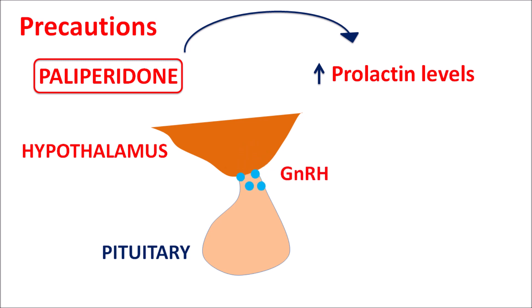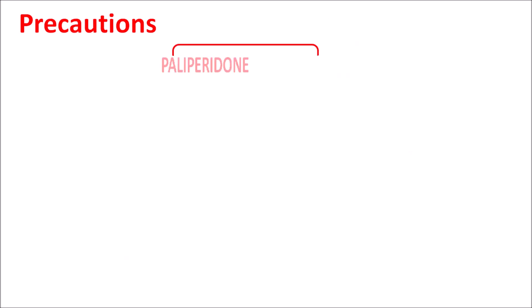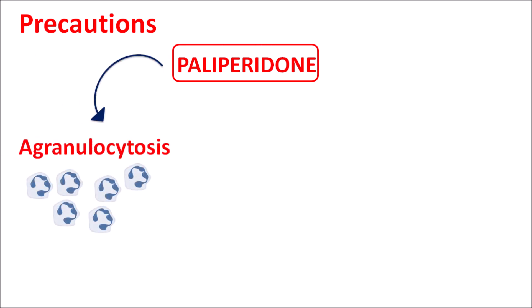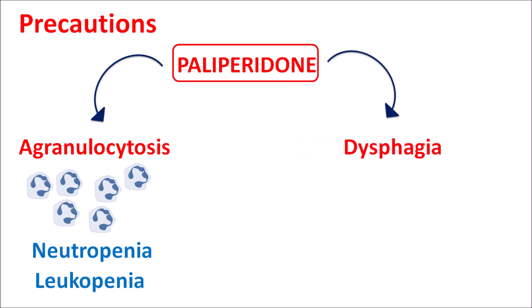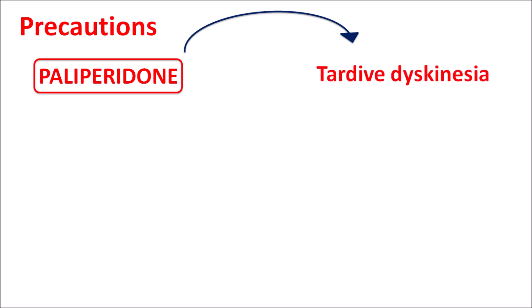Paliperidone can increase prolactin levels by antagonizing D2 receptors, affecting the hypothalamic-pituitary axis. It inhibits gonadotropin-releasing hormone, thereby inhibiting the release of FSH and LH (luteinizing hormone), leading to impotence in patients. This drug can also produce agranulocytosis, resulting in neutropenia and leukopenia.